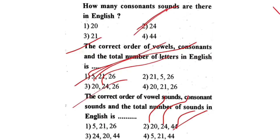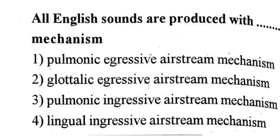Next question: All English sounds are produced with which mechanism? First one, pulmonic egressive airstream mechanism. Second one, glottalic egressive airstream mechanism. Third one, pulmonic ingressive airstream mechanism. Fourth one, lingual ingressive airstream mechanism. The correct answer is first one — pulmonic egressive airstream mechanism.